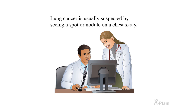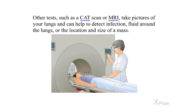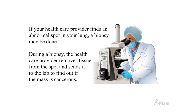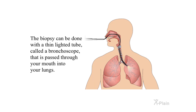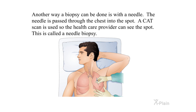Diagnosis: Lung cancer is usually suspected by seeing a spot or nodule on a chest X-ray. Other tests such as a CAT scan or MRI take pictures of your lungs and can help detect infection, fluid around your lungs, or the location and size of a mass. If your healthcare provider finds an abnormal spot in your lung, a biopsy may be done. During a biopsy, the healthcare provider removes tissue from the spot and sends it to the lab to find out if the mass is cancerous. The biopsy can be done with a thin lighted tube called a bronchoscope passed through your mouth into your lungs, or with a needle passed through the chest into the spot using a CAT scan — this is called a needle biopsy.